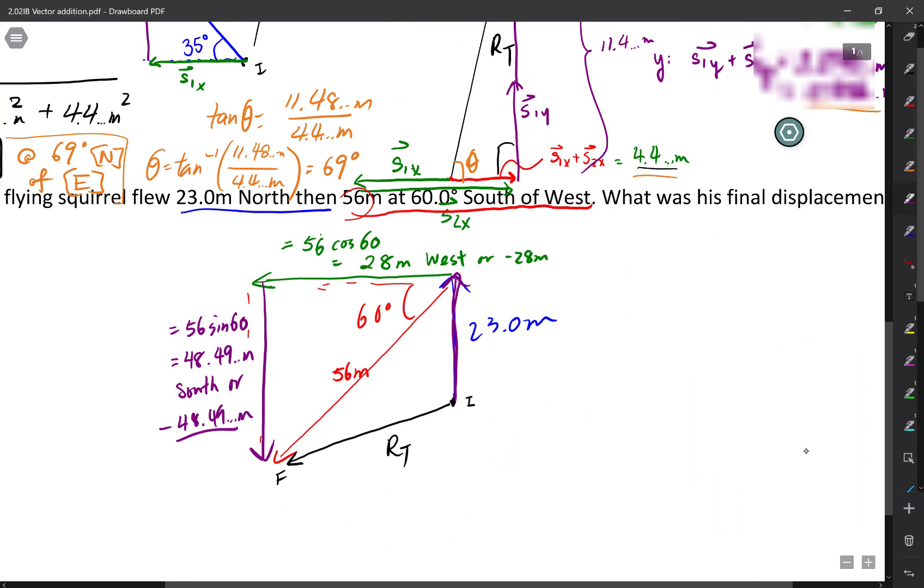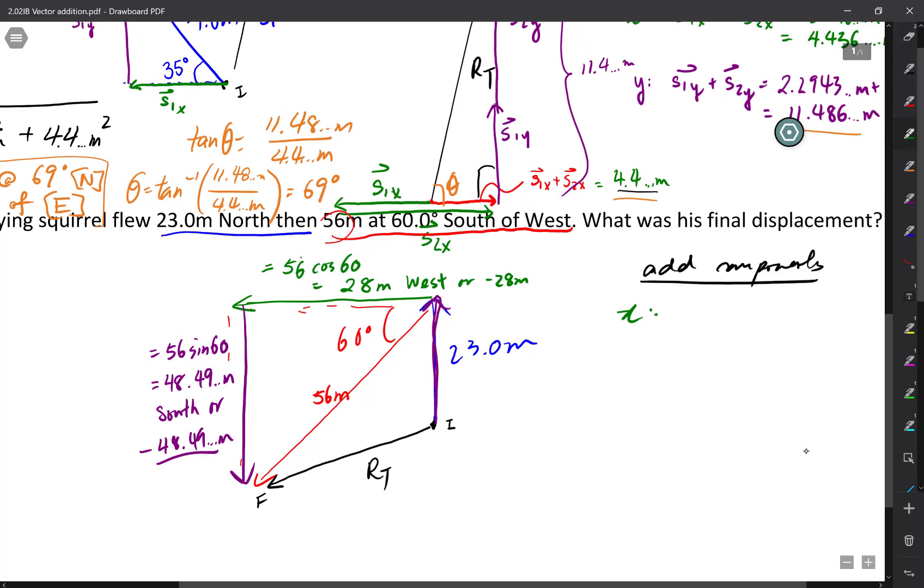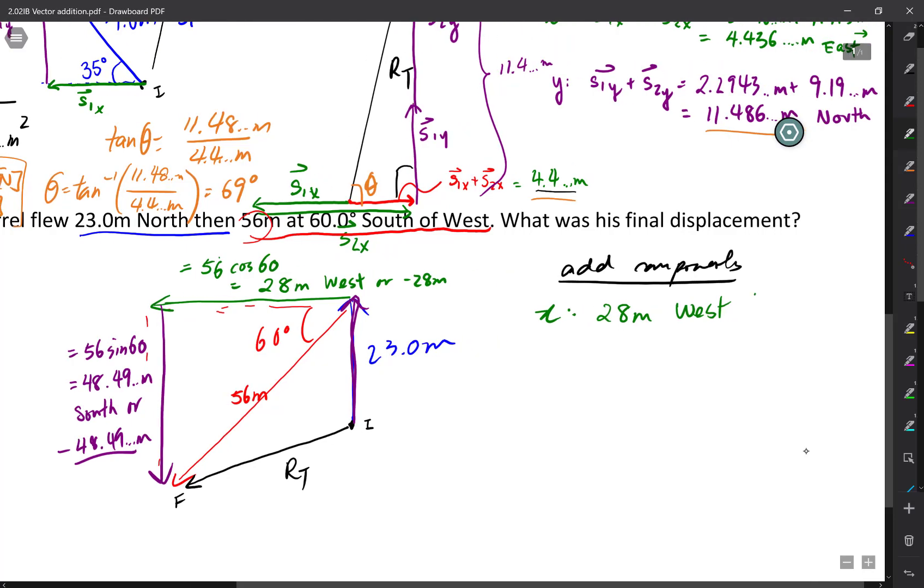Okay, so here are all of my components. To add components, I'm going to first start off with my x direction. But hey, I don't have to add anything because the 28 meters is everything that we have. There's no other x components. So I'm going to write here 28 meters west because that's all we have. That's it, nothing else. Or I can write this as negative 28 meters instead.